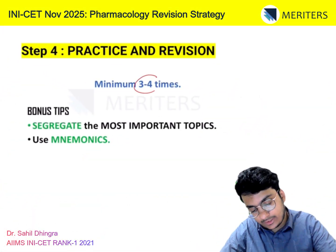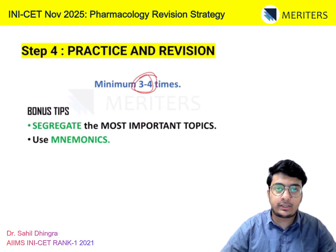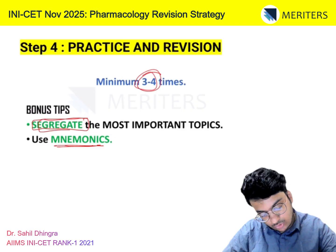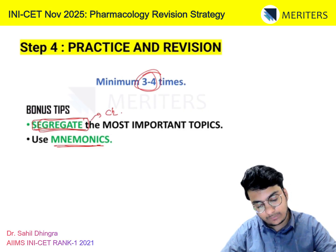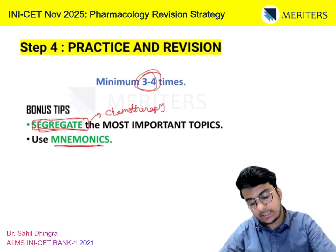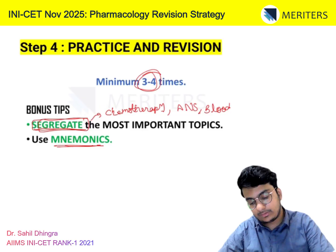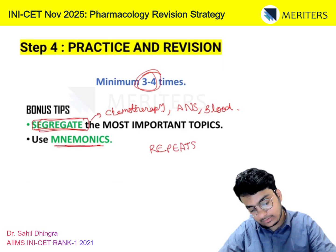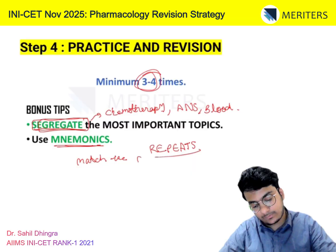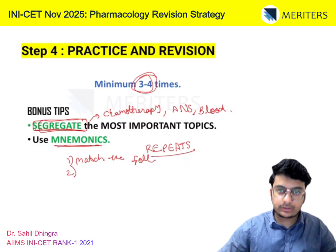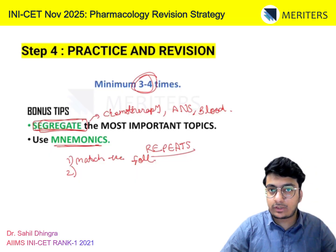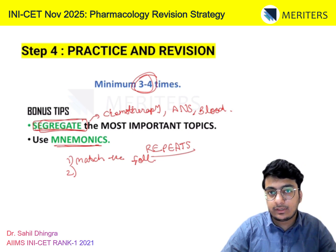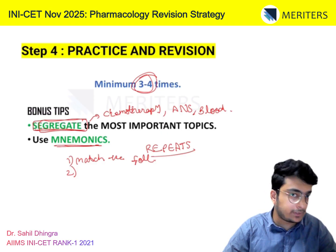You have to revise at least 3 to 4 times. It is a memory-based subject, so use mnemonics — similar to General Anatomy. The goal is to segregate the most important topics and complete them first: Chemotherapy, ANS, Blood. These are very important for INI. Also focus on repeats. Note that match-the-following questions are commonly asked in Pharmac. Scoring well in repeats and basics will help you outscore other students, since it is a difficult subject for everyone.